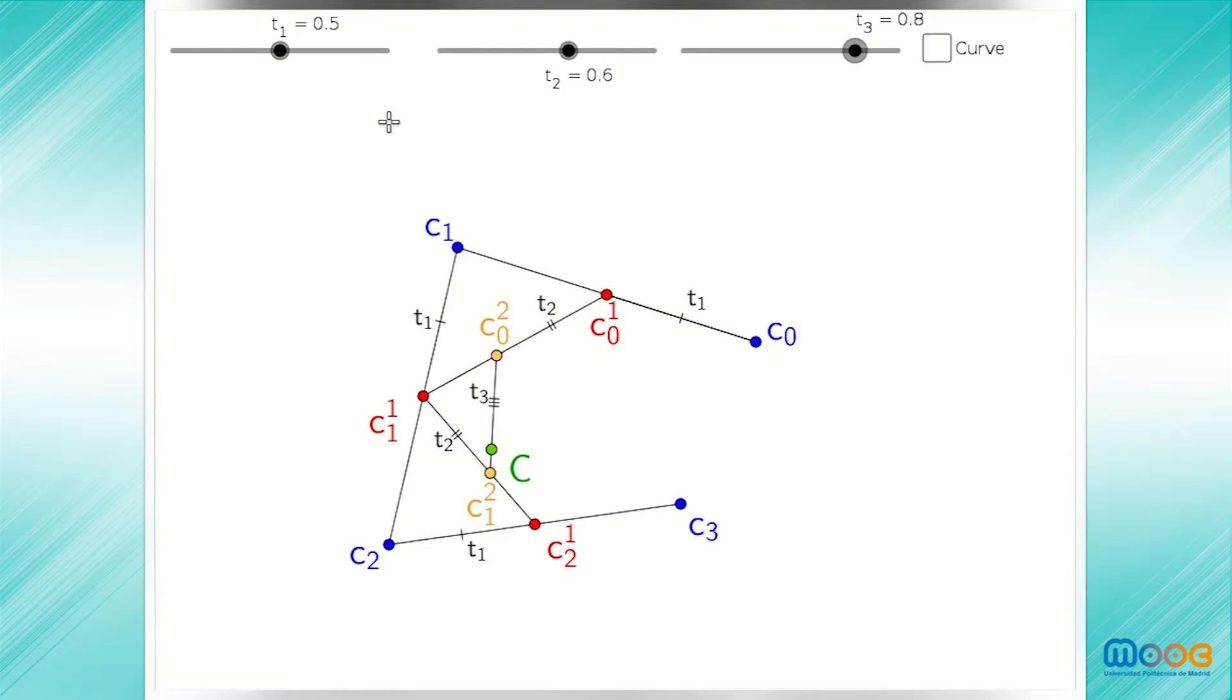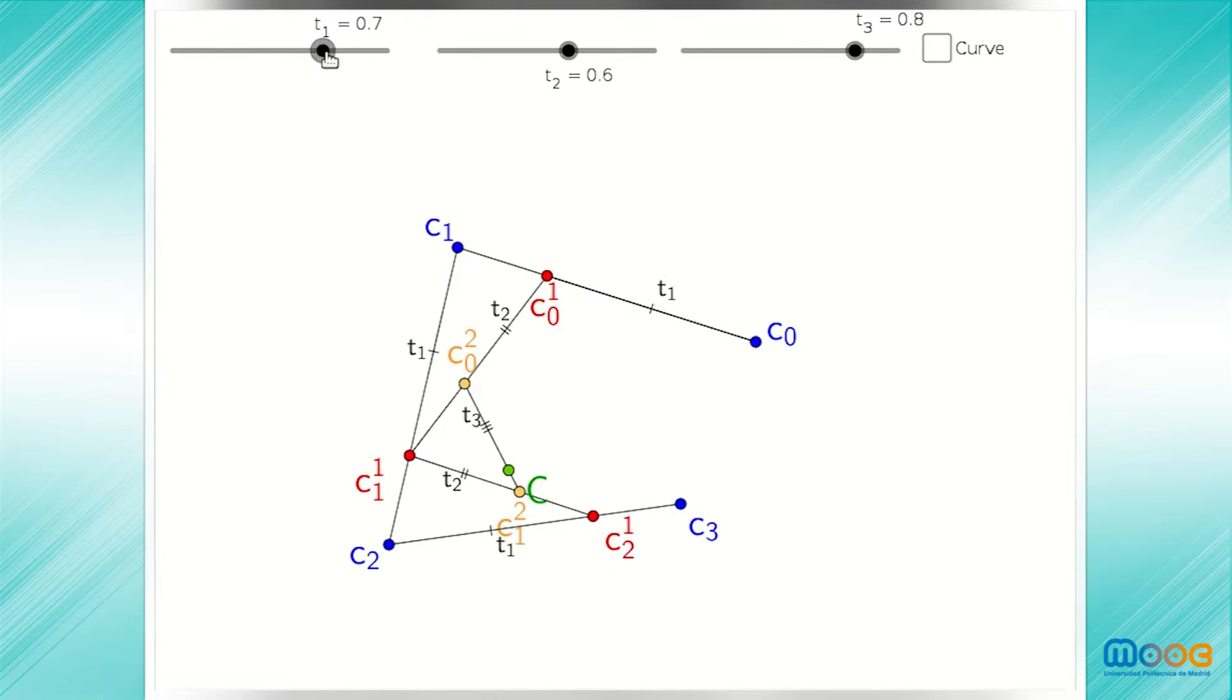Here we see the polar form of the cubic Bezier curve. As we move t sub 1, what changes are the points selected in the first step of the de Casteljau algorithm. As we move t sub 2, what changes are the orange points, those obtained in the second step. As we move t sub 3, what changes is the selection of the point on the last segment.